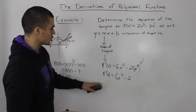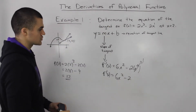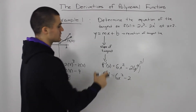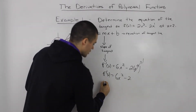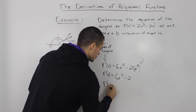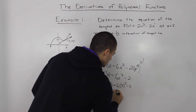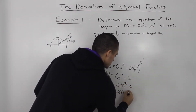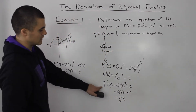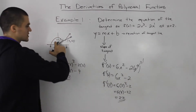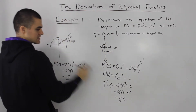The derivative gives us the slope of the tangent at any x value. We need the slope at x equals 2, so we evaluate f prime of 2: 6 times 2 squared minus 2, which is 6 times 4 minus 2, giving us 22. So the slope of the tangent at x equals 2 is 22.